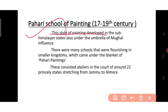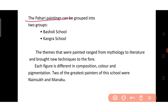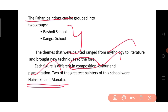The Pahari school of painting, from the 17th to 19th century, developed in the sub-Himalayan states also under the influence of the Mughals. Many schools flourished in smaller kingdoms that come under the Pahari school, consisting of ateliers in the courts of around 22 princely states stretching from Jammu to Almora in Uttarakhand. The Pahari school can be divided into two groups: Basohli school and Kangra school. Themes ranged from mythology to literature, and new techniques were introduced. Each figure has a different composition, colour and pigmentation. The two greatest painters of the Pahari school were Nainsukh and Manaku.